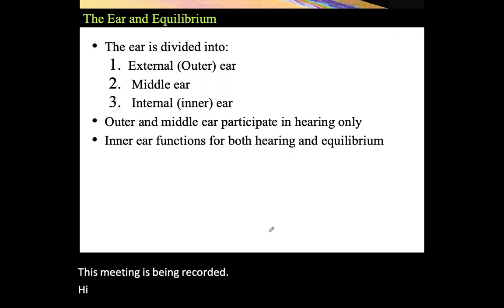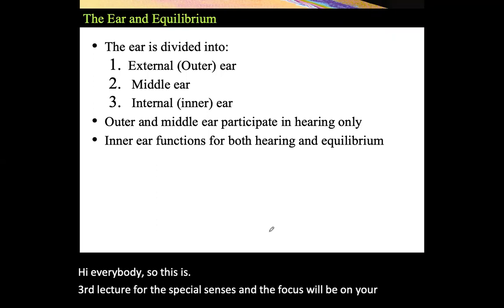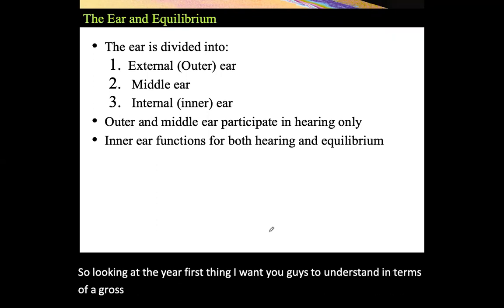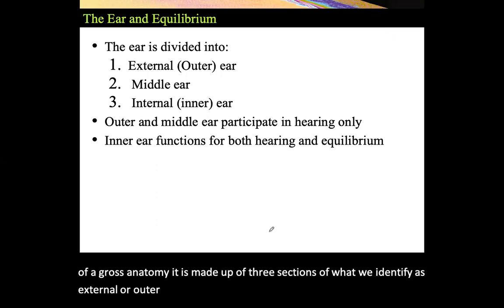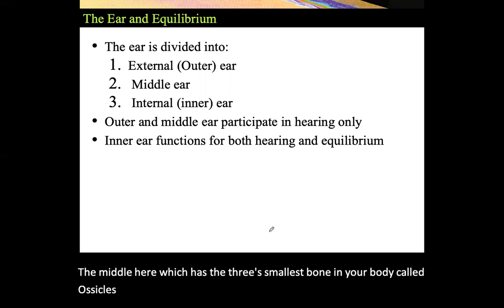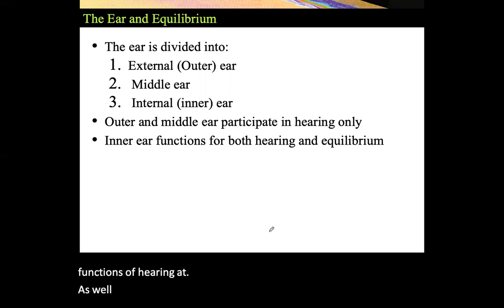This is the third lecture for the special senses, and the focus will be on your ears and ear anatomy. In terms of gross anatomy, the ear is made up of three sections: the external or outer ear, the middle ear which has the three smallest bones in your body called ossicles, and the internal or inner ear, which is responsible for two main functions — hearing and equilibrium.